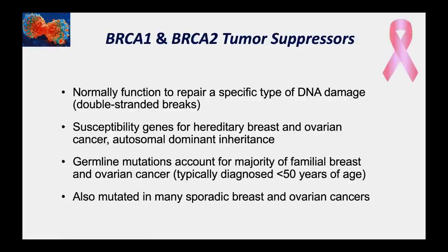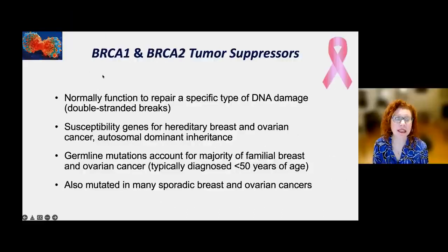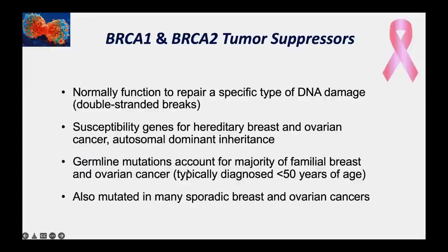Another tumor suppressor gene you may have heard of is BRCA1—and there are actually two: BRCA1 and BRCA2. These genes are involved with familial hereditary breast and ovarian cancers, and are also inherited in a dominant fashion, passed from one generation to the next, with cancer seen in every generation. These genes encode proteins that normally function to repair a very specific type of DNA damage called double-stranded breaks. Our DNA is double-stranded, so a break through both strands is a very dangerous type of damage, making this an important repair system.